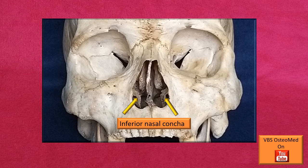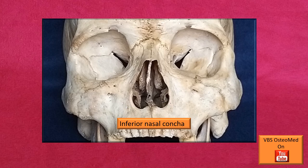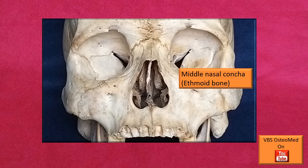On the lateral side, projecting into the nasal cavity behind the anterior nasal aperture, there are some small projections or partitions — small canopies. The one shown here is the inferior nasal concha. Right above it is the middle nasal concha. Note that while the inferior nasal concha is an individual bone — one of the small bones — the middle nasal concha is a part of the ethmoid bone.